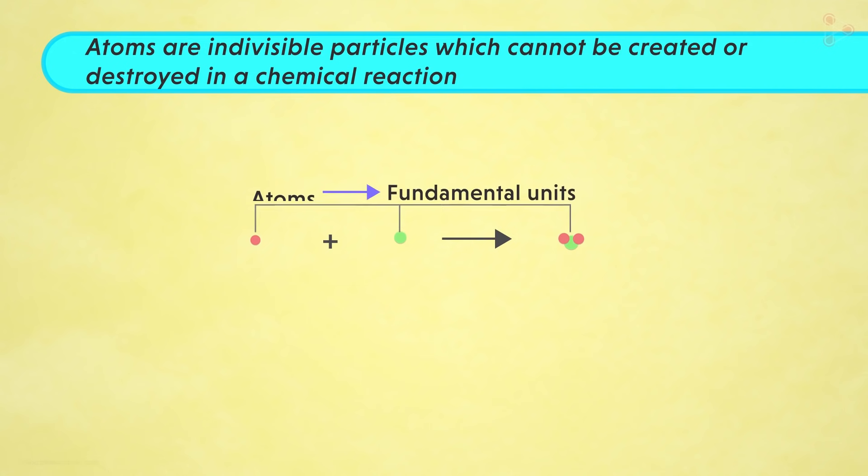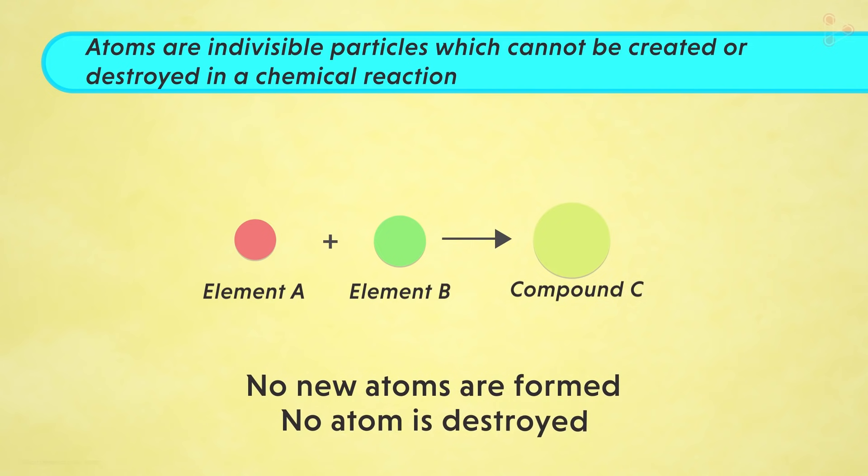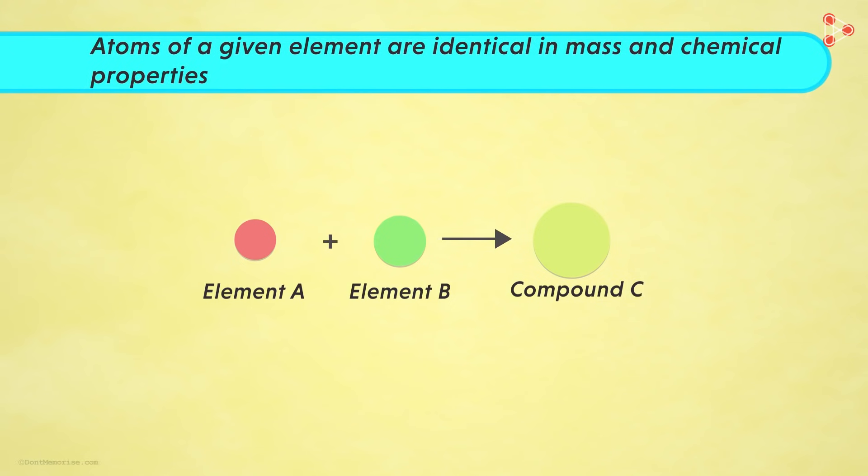However, no new atoms can be created and existing ones cannot be destroyed. So in this case, the atoms of element A and B are just combining to form compound C. So can we say that no new atoms are formed in this case? Yes! And similarly, no atom is destroyed.